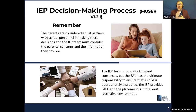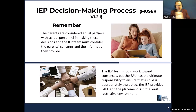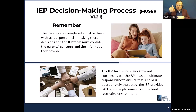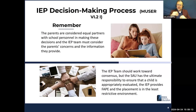Some important points to remember: parents are considered equal partners with school personnel in making these decisions, and the IEP team must consider the parents' concerns and any information they provide. The flip side is that the IEP team should work towards consensus with the parent, but the SAU has the ultimate responsibility to ensure that a child is appropriately evaluated, that the IEP provides FAPE, and that placement is in the least restrictive environment — meaning the SAU makes that final decision if the team cannot reach consensus.